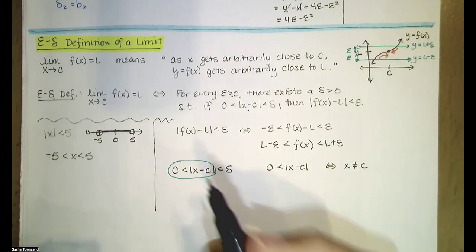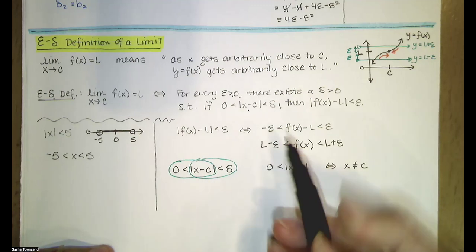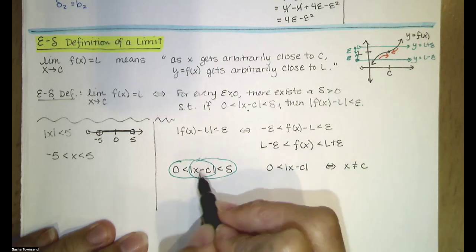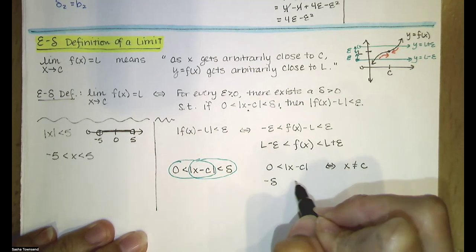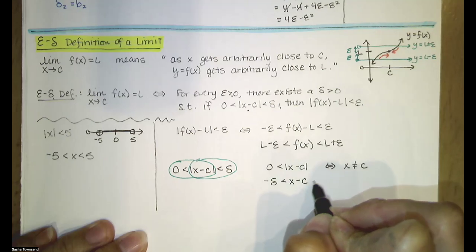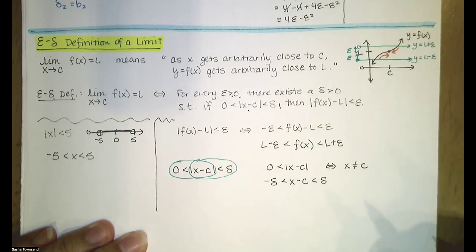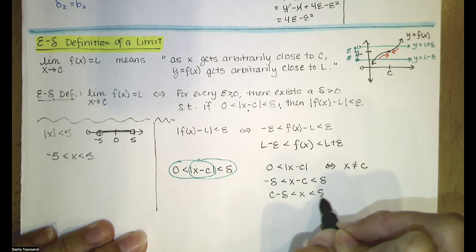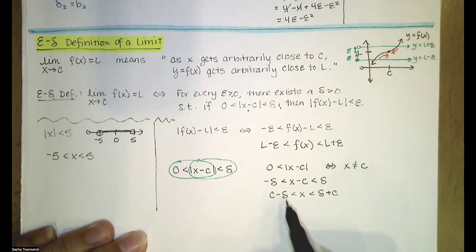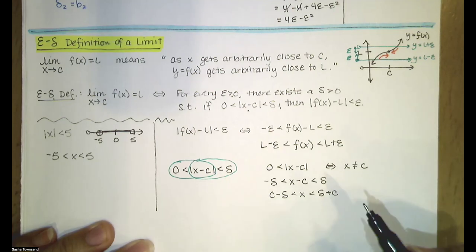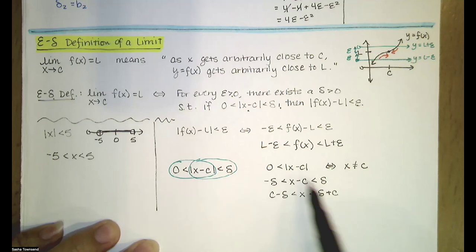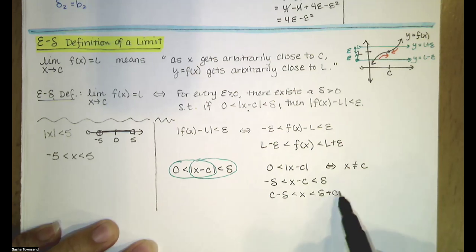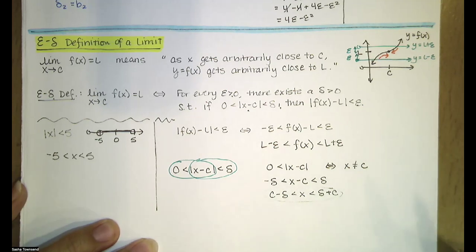This part can be interpreted the same way as before. The absolute value of x minus c being less than delta means that x minus c is between negative delta and delta. Adding c to all three parts, x is between c minus delta and c plus delta. So the compound inequality means x is in that interval and x is not equal to c.